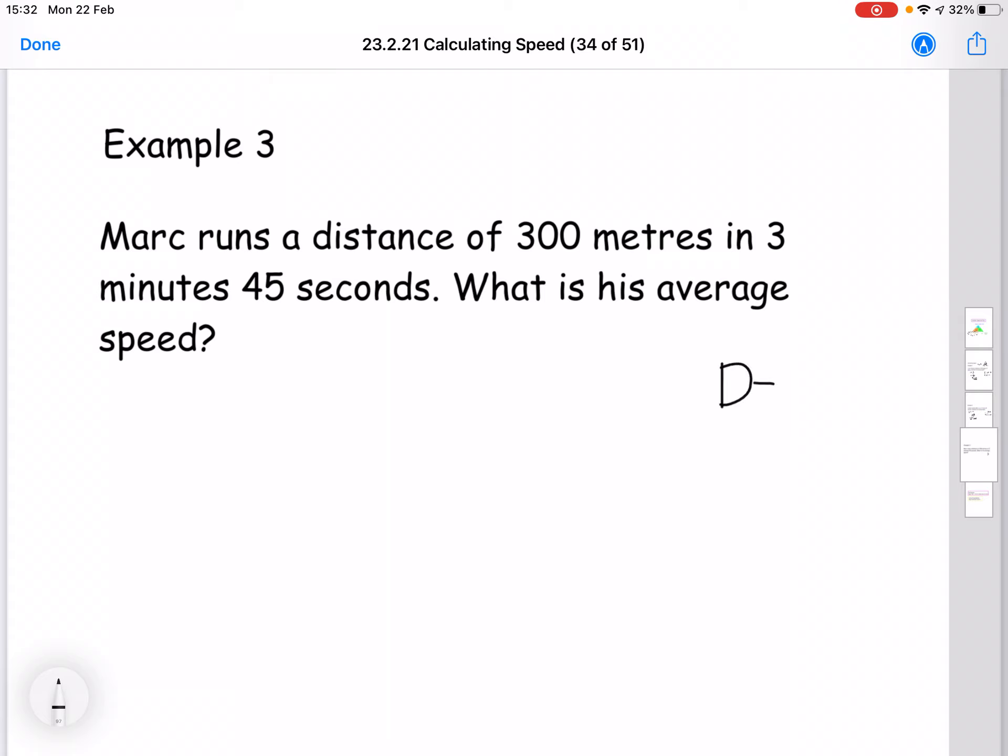So if we write out our variables: distance, speed and time, our distance is 300 meters. Speed is what we're trying to calculate, so question mark. And our time here is three minutes, 45 seconds.